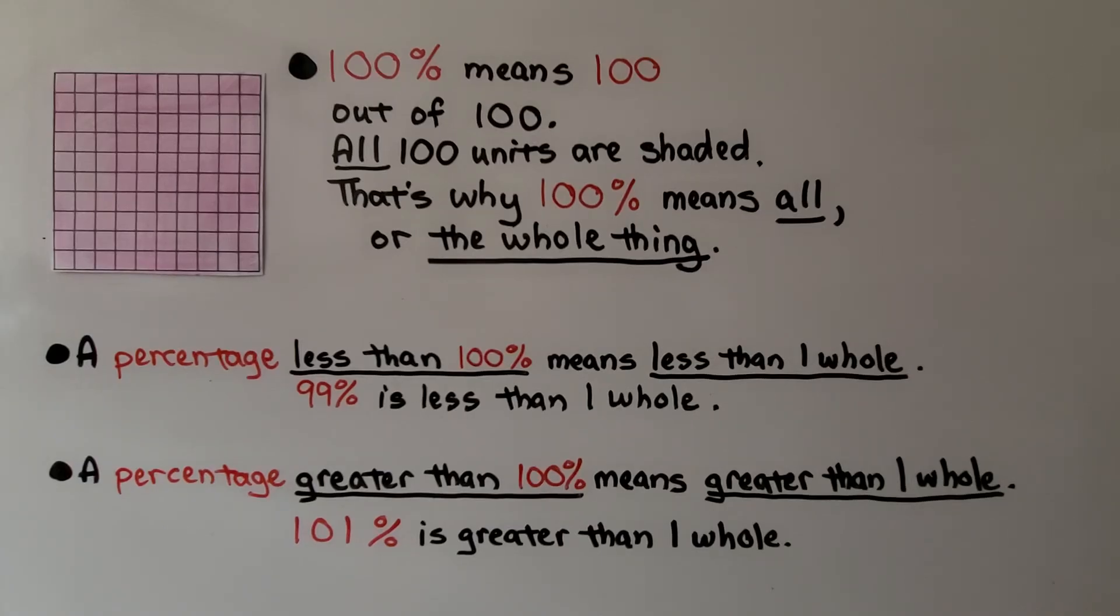100% means 100 out of 100. All 100 units are shaded. That's why 100% means all or the whole thing. You'll hear someone say 100%. It's all of it.